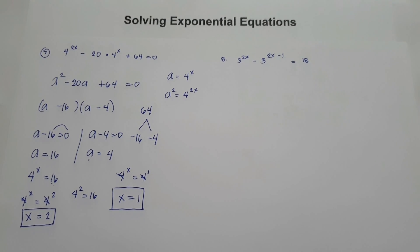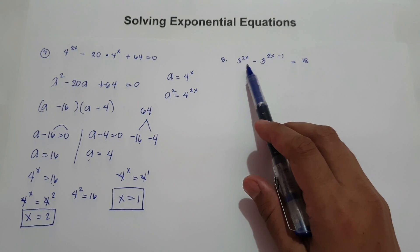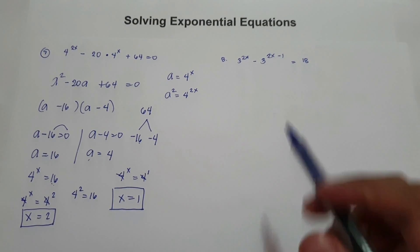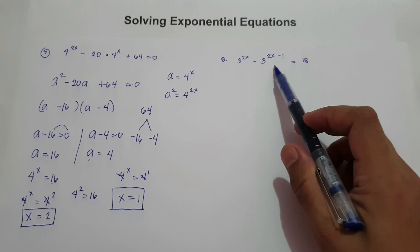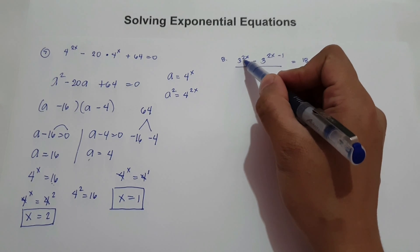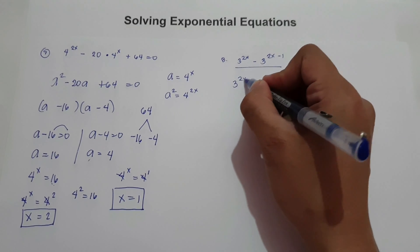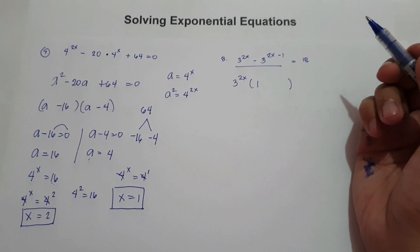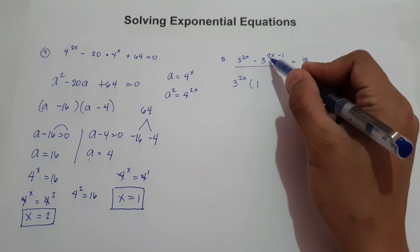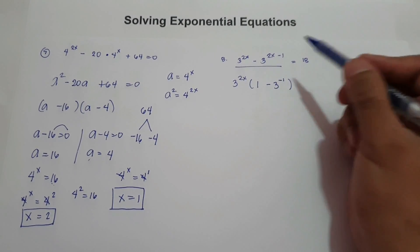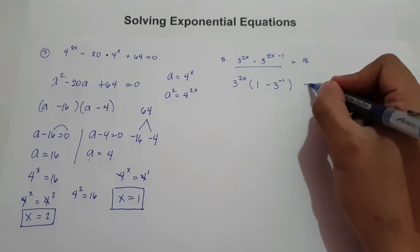What about number 8? Find the value of x. We have 3 raised to 2x minus 3 raised to 2x minus 1 equals 18. Since we can't change 18 with base 3, let us factor this expression. The greatest common factor of 3 raised to 2x and negative 3 raised to 2x minus 1 is 3 raised to 2x. So 3 raised to 2x divided by 3 raised to 2x is 1, and negative 3 raised to 2x minus 1 divided by 3 raised to 2x is negative 3 raised to negative 1.